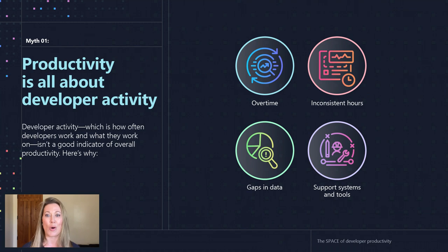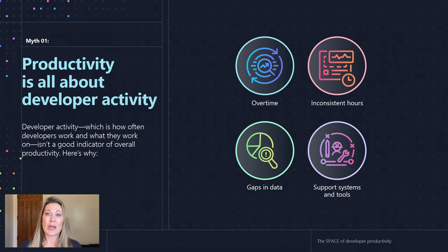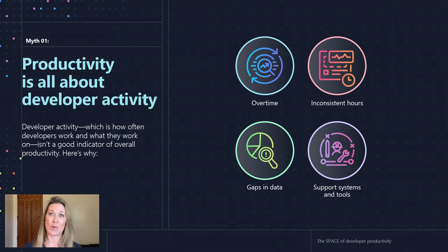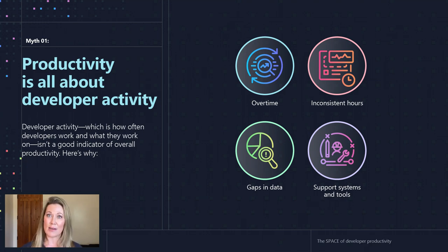When we talk about productivity being only about developer activity, this is the one I hear the very most often. But really, there's so much more there. Sometimes developers have to work overtime to meet a schedule, and sometimes that schedule has been poorly set by someone else. Or sometimes we keep inconsistent hours because of work-life balance. There are also gaps in our data that are very common. Even straightforward metrics like pull requests just don't tell the whole story.